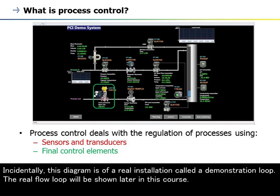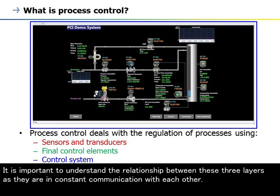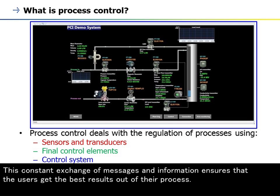Incidentally, this diagram is of a real installation called a demonstration loop. The real flow loop will be shown later in this course. It is important to understand the relationship between these three layers, as they are in constant communication with each other. This constant exchange of messages and information ensures that the users get the best results out of their process.